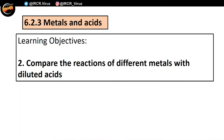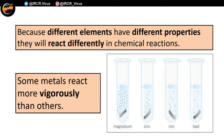Moving on, learning objective number two: compare the reaction of different metals with diluted acids. Because different elements have different properties, they will also react differently in chemical reactions — some elements will react more vigorously than others. In the picture here, we have a magnesium strip reacting with an acid, and you have loads of bubbling and fizzing happening — that's also called effervescence.